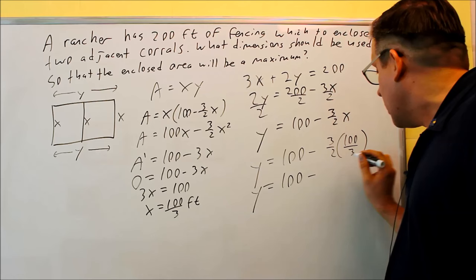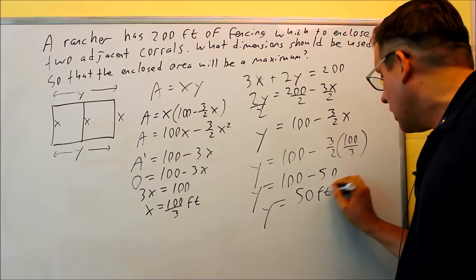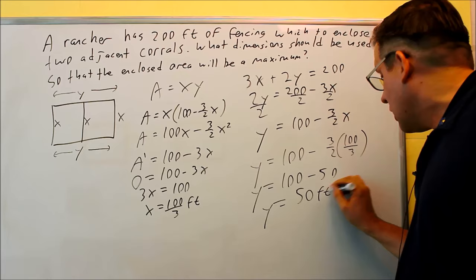I get 100 minus 50 here. So, that means that the dimension for y is going to be 50 feet. So, I get 100 thirds for x and I get 50 feet for the y. These would be the two dimensions that would give us the maximum area if we only have 200 feet of fencing available.